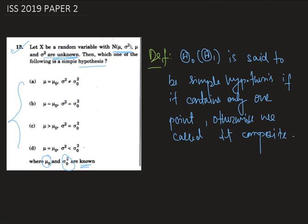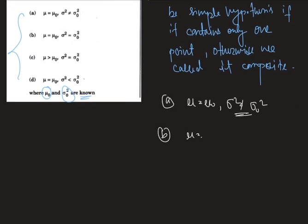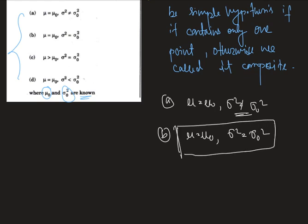Now let's see the first option. In option A, μ = μ₀ but σ² ≠ σ₀², therefore this is not a simple hypothesis as σ² doesn't contain only one point. Option B is μ = μ₀ and σ² = σ₀² — this must be the correct option as this hypothesis contains only one point, which is μ₀ and σ₀². Therefore our answer is option B.